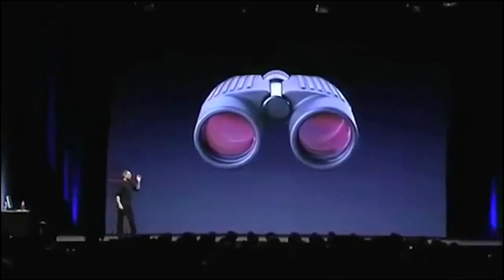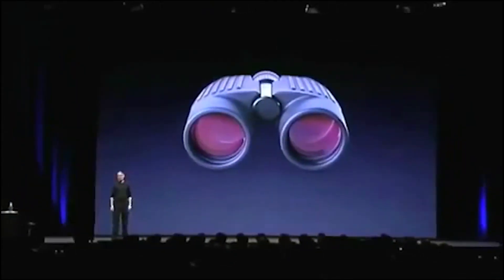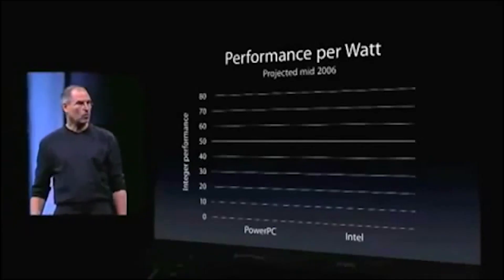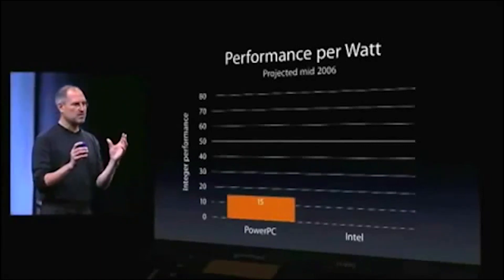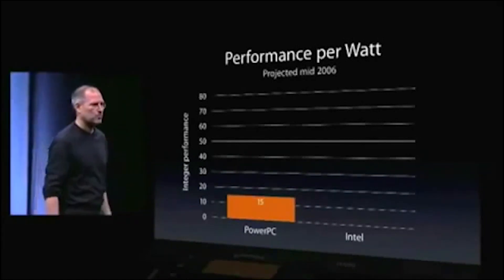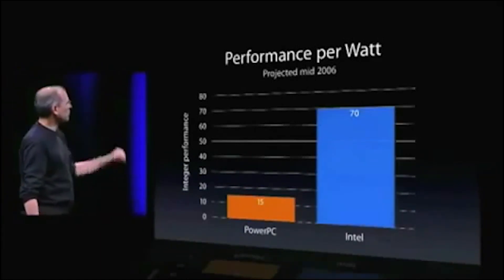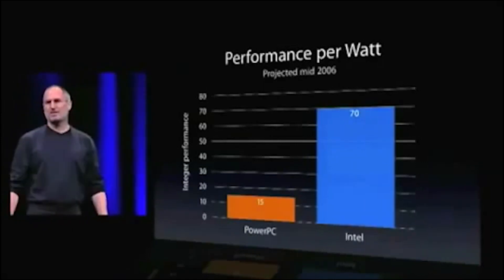We can envision some amazing products we want to build for you. You want to deliver the highest performance at the lowest power consumption. What we see is the PowerPC gives us about 15 units of performance per watt, but the Intel roadmap in the future gives us 70.